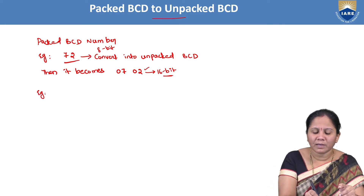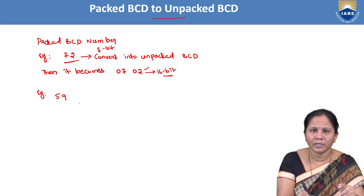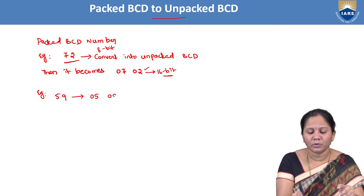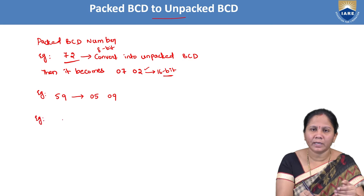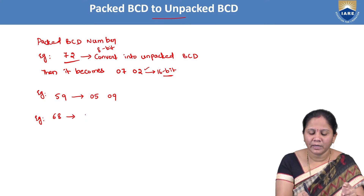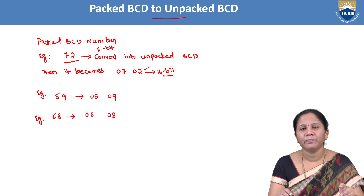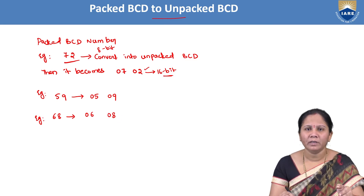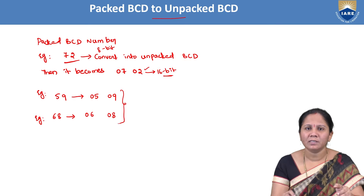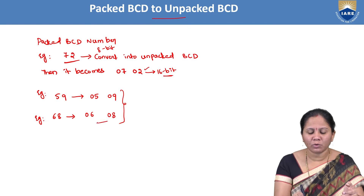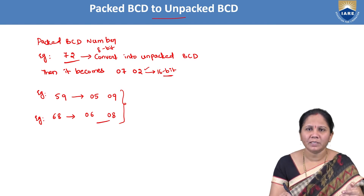For example, if you take packed BCD number 59, if we unpack it, it becomes 0509. Similarly, if you take 68, after unpacking it becomes 0608. This is how we convert packed BCD to unpacked BCD. In order to make this conversion, we need to know the assembly language instructions to execute packed BCD to unpacked BCD conversion.